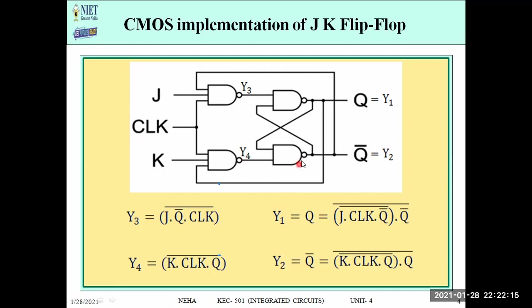Now we have the values of y1 and y2. That means we have two expressions for the JK flip-flop. From y1 and y2 we can calculate the pull-down network (PDN) and pull-up network (PUN) and design the CMOS circuit. Let us first look at y1. The value of y1 is this expression — y1 corresponds to Q.